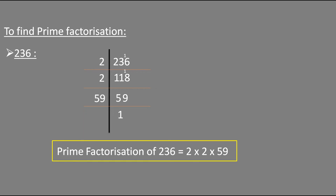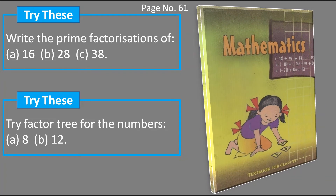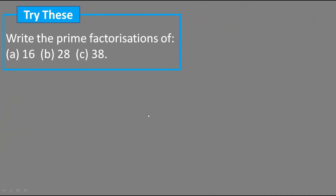On page number 61 from the CBSE NCERT Mathematics textbook of Grade 6, there are two questions. They ask us to find the prime factorization of given numbers and to draw a factor tree for those numbers. The first question is: write the prime factorization of these numbers. The first number is 16.